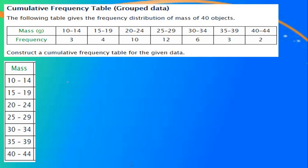How to find the adjustment factor? For the first class interval, 14 is the upper class limit. For the second class interval, 15 is the lower class limit. It is not continuous, so we need to find an adjustment factor. The formula is: lower class limit of the second interval minus upper class limit of the first interval, divided by 2. That is 15 minus 14 divided by 2, which is 1 divided by 2, equals 0.5. So 0.5 is the adjustment factor.